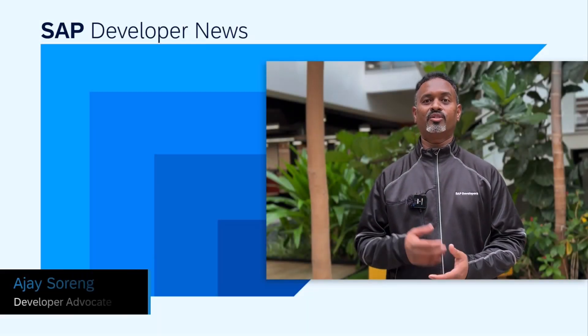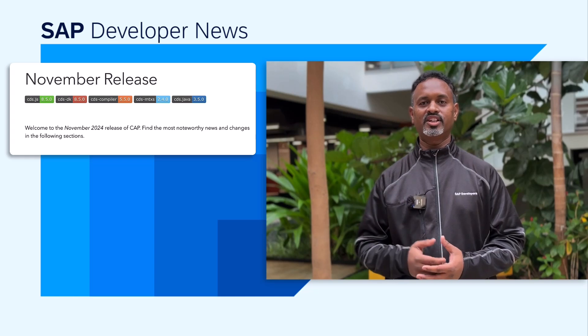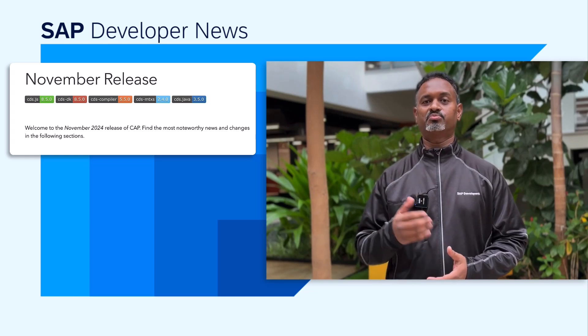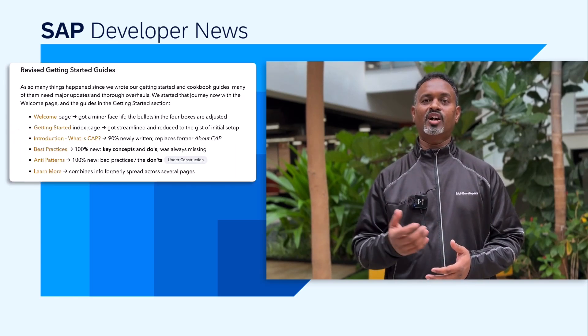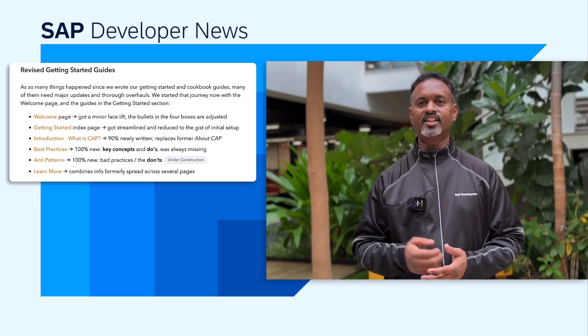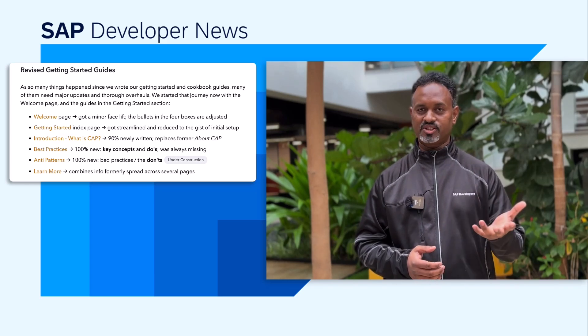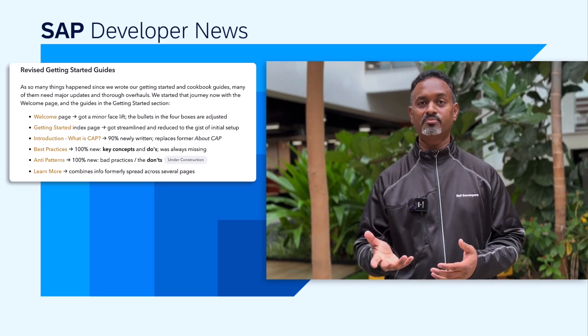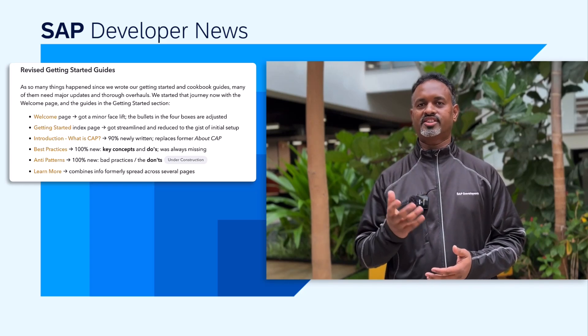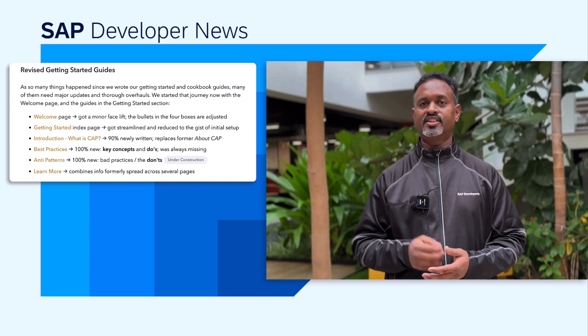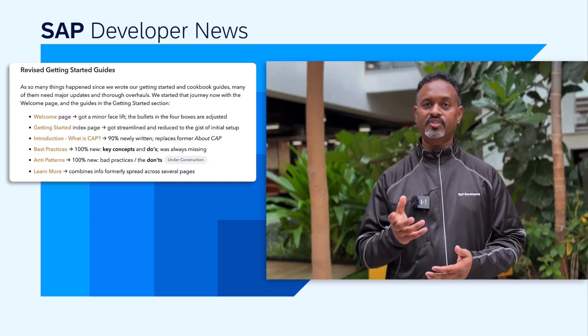Hello, everyone. The November release of Capire 2024 is now available. So many things have happened since the first release of Getting Started and Cookbook Guides — many of them needed major updates and overhaul. Hence, Capire now has revised Getting Started Guides and also an overview of key concepts. Welcome page, Getting Started Index Pages, Introduction, What is CAP, Best Practices and Anti-Patterns are some of the revised content.